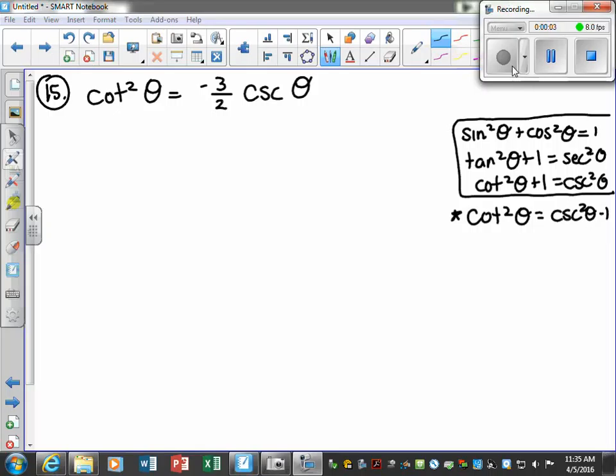Okay, our last example. So cotangent squared theta is equal to negative three halves cosecant theta.